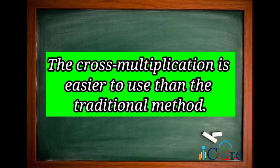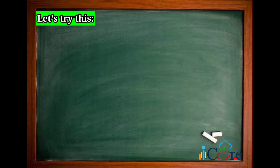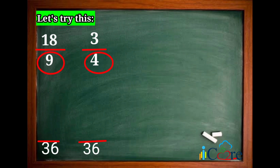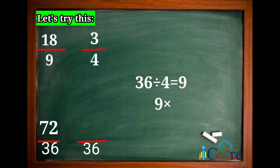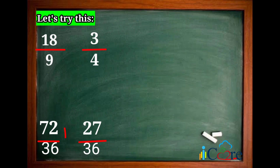The latter method is easier and doesn't take as much time as the former. Let's try another example using the two methods: 18 over 9 and 3 over 4. The LCD of 9 and 4 is 36. 36 divided by 9 is equal to 4. 4 times 18 is 72. Then, 36 divided by 4 is equal to 9. 9 times 3 is equal to 27.